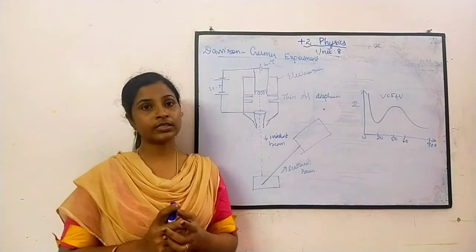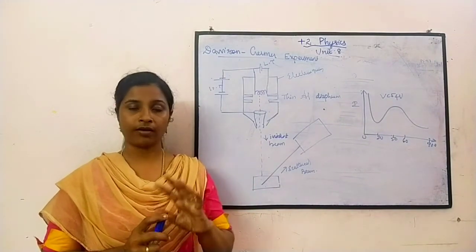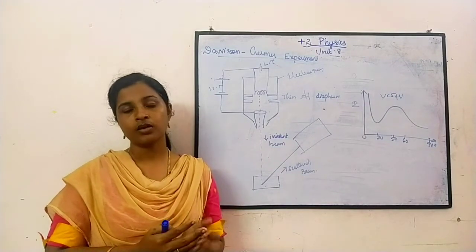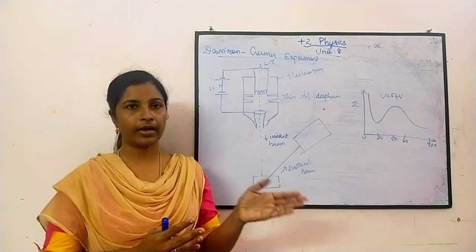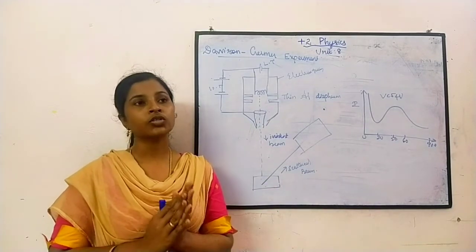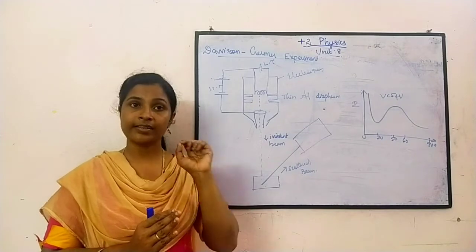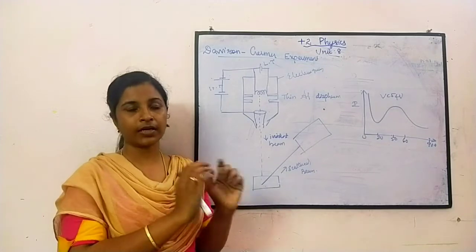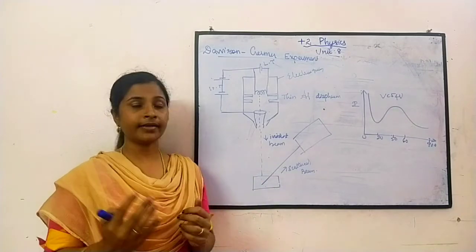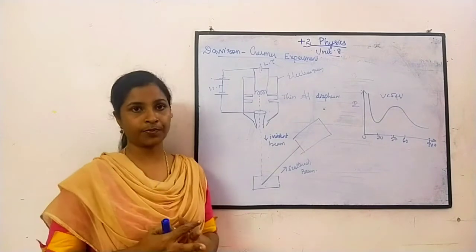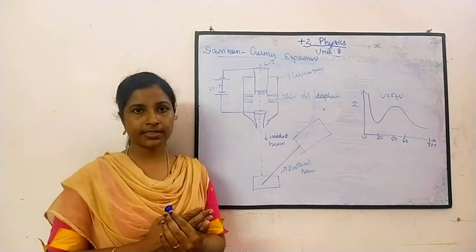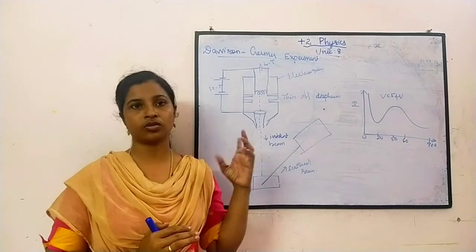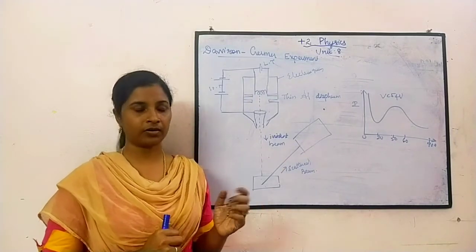De Broglie's hypothesis says that electrons will also behave as waves, and material will also have a wave nature with a wavelength. The wavelength is found to be 12.27 divided by root V. So I told you already that this is only the hypothesis. At that time there were no experiments to prove that yes, it is the correct wavelength. Later, Davison and Germer did an experiment.